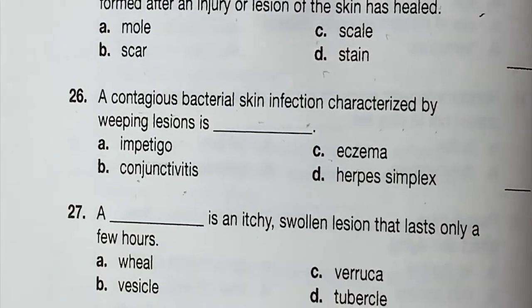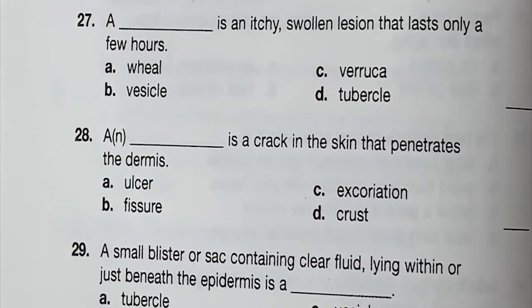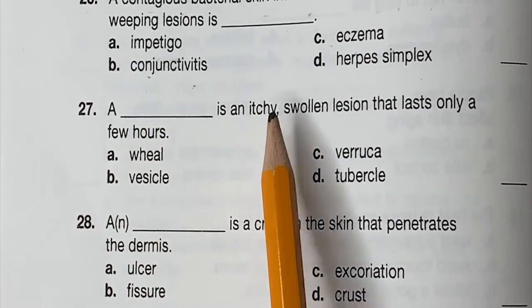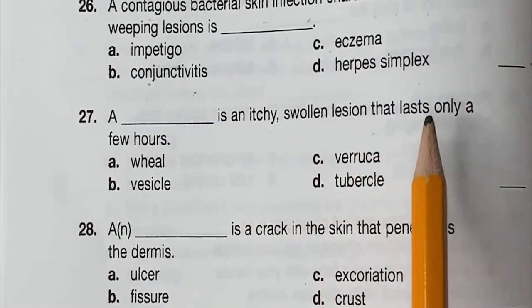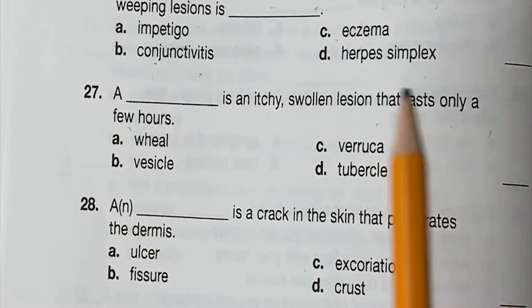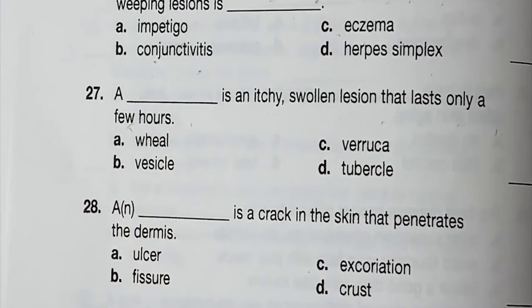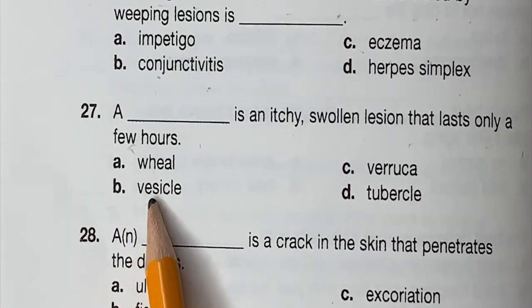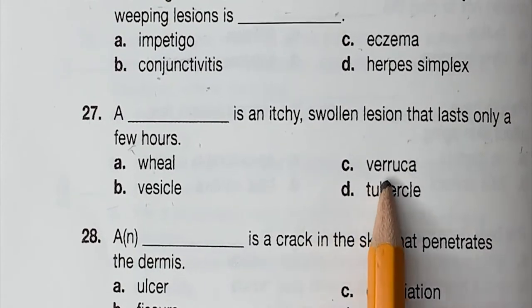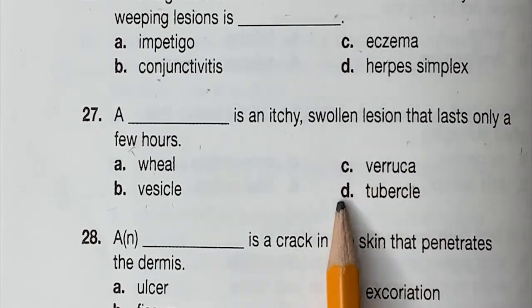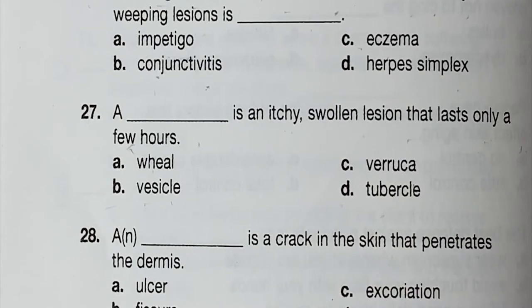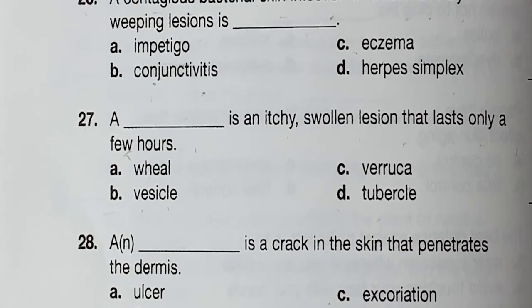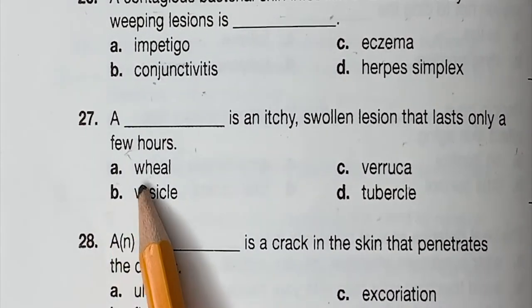Question 27: A blank is an itchy, swollen lesion that lasts only a few hours. Is it A, a wheal. B, a vesicle. C, verruca. Or D, papule. And the correct answer is A, a wheal.